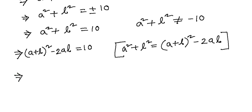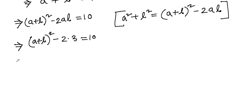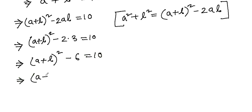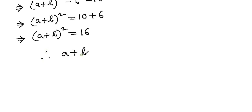...we get (a + b)² - 2ab = 10. We know ab = 3, so (a + b)² - 2 × 3 = 10, which gives (a + b)² - 6 = 10, so (a + b)² = 16. Therefore a + b = ±4. So this is the result.